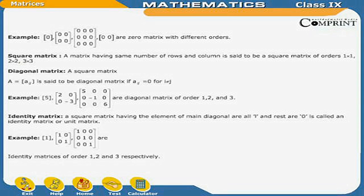Square matrix: A matrix having the same number of rows and columns is said to be a square matrix of order 1 by 1, 2 by 2, 3 by 3, etc. A square matrix A equal to Aij is said to be a diagonal matrix if Aij is equal to 0 for i not equal to j. For example, [5], [2, 0; 0, minus 3], and the matrix with diagonal elements 5, 6 are diagonal matrices of order 1, 2, and 3.